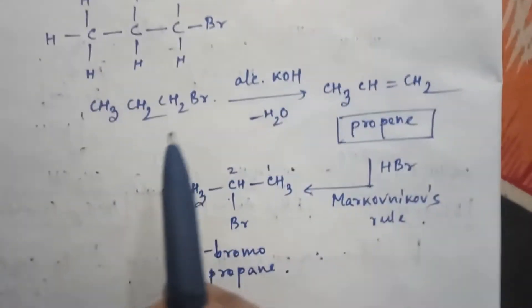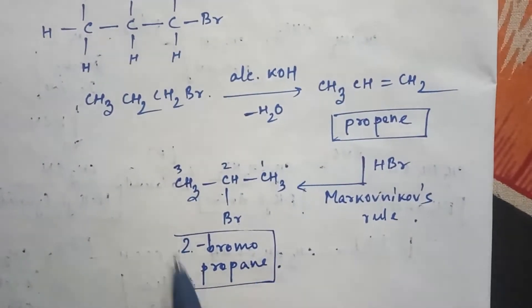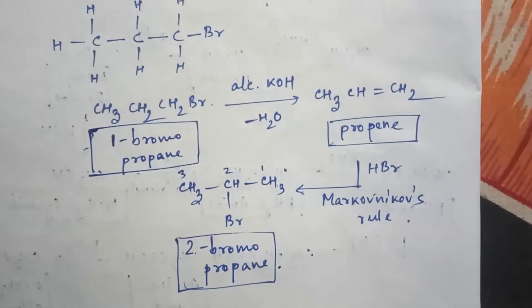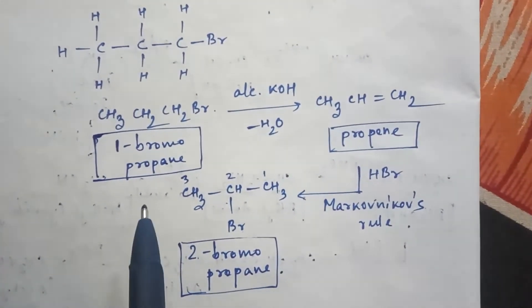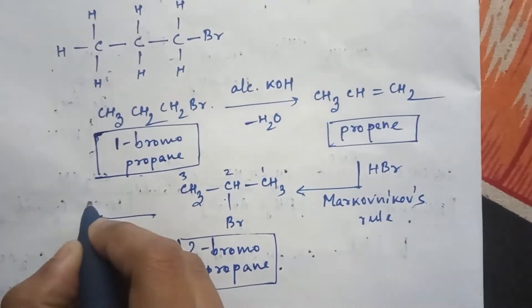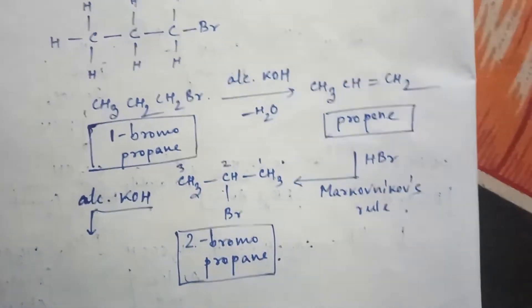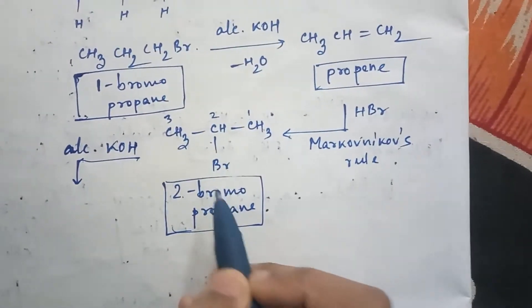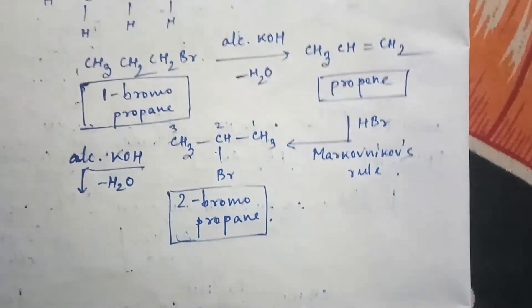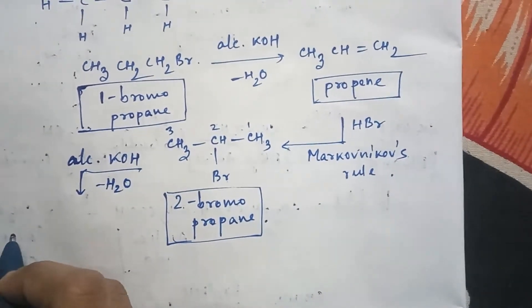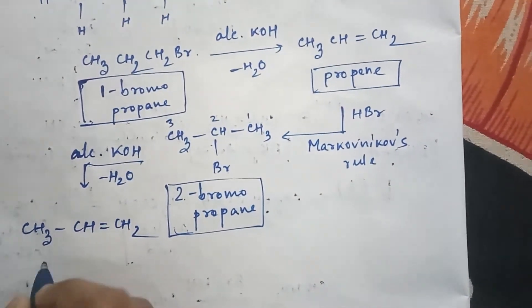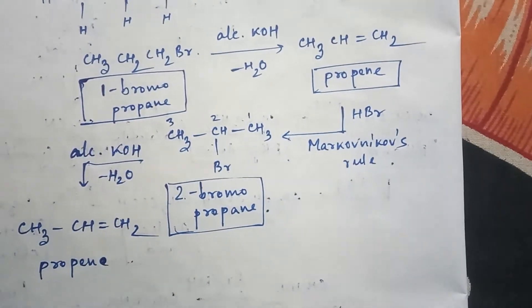So the conversion from 1-bromopropane to 2-bromopropane is complete. Now let's see the reverse process — how to convert 2-bromopropane into 1-bromopropane. For that, we again use the dehydrohalogenating agent alcoholic KOH. The bromine group is removed along with a hydrogen to give propene, CH3-CH=CH2.